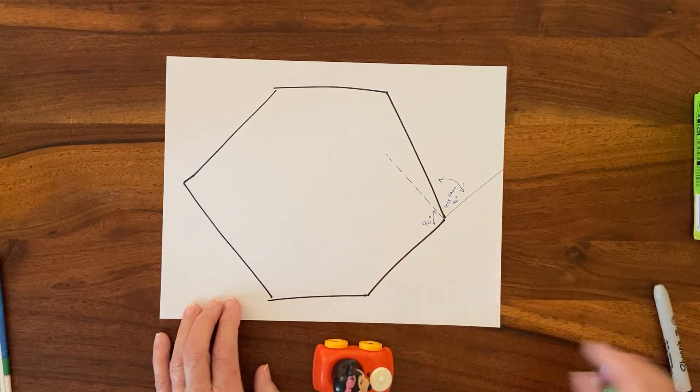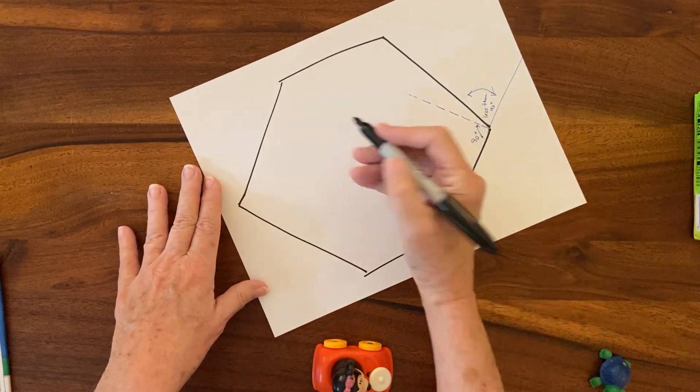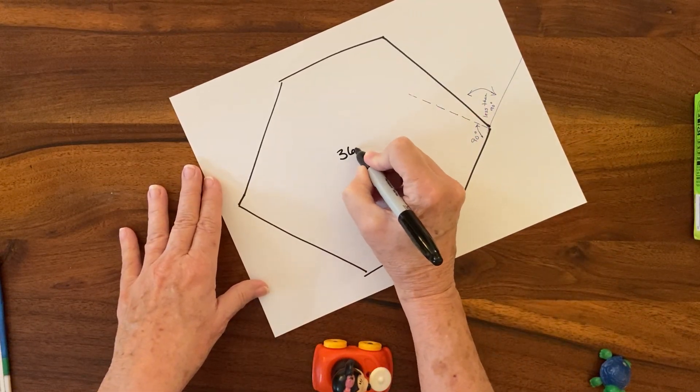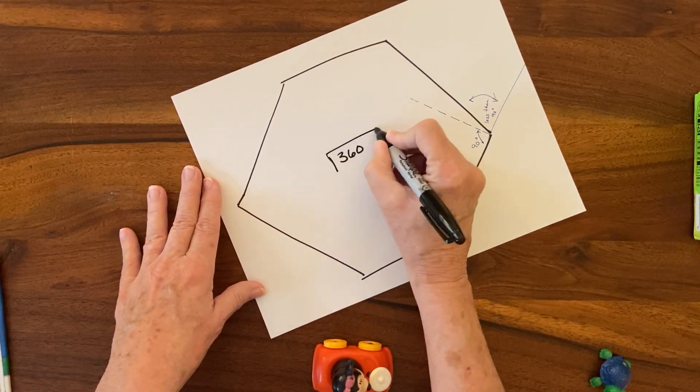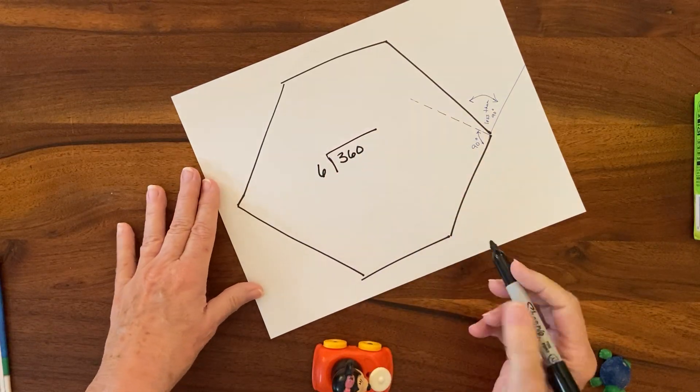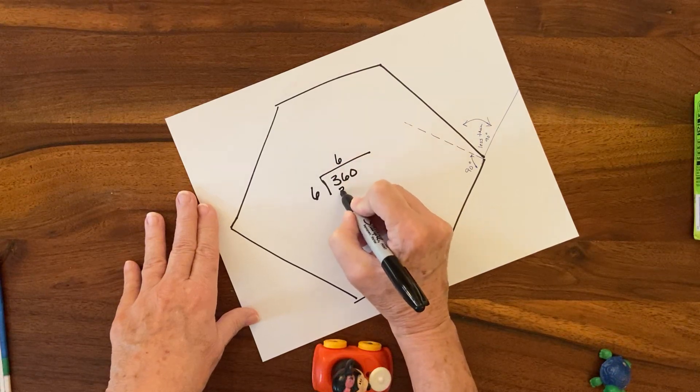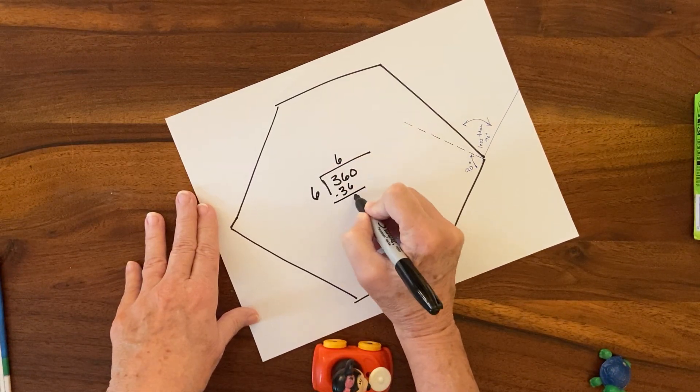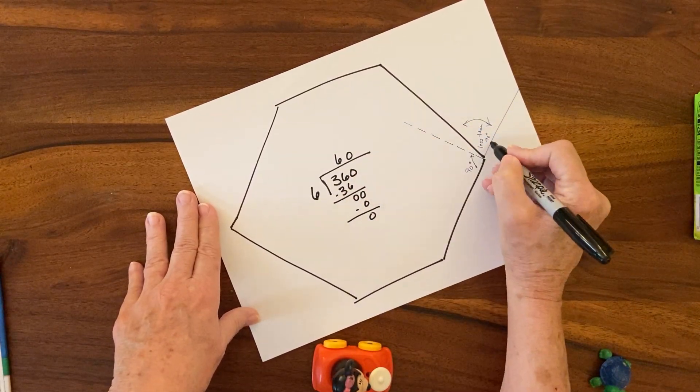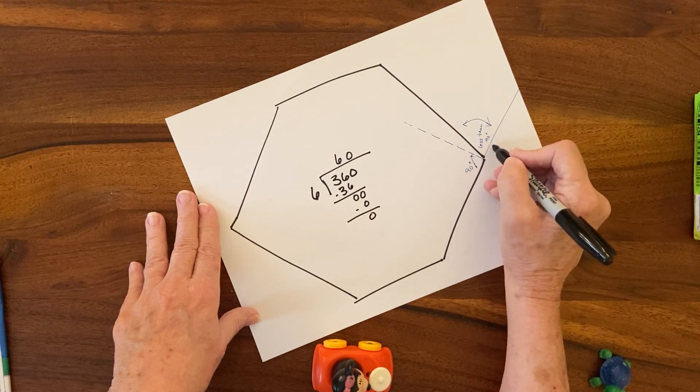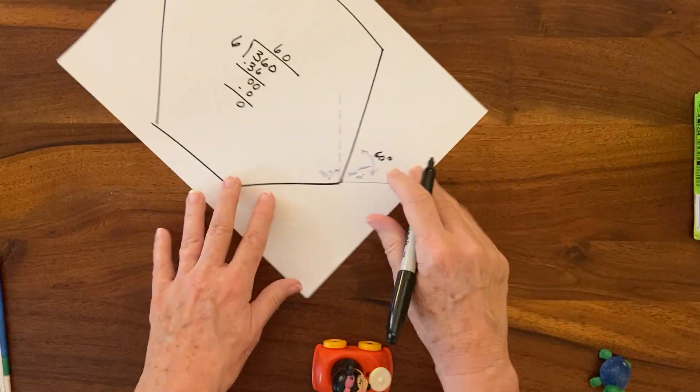She had six turns, correct. So 360 degrees total—you want to know what each turn was if there were six of them. Six goes into 36 six times. This turn right here, it's less than 90, it actually ends up being 60 degrees.